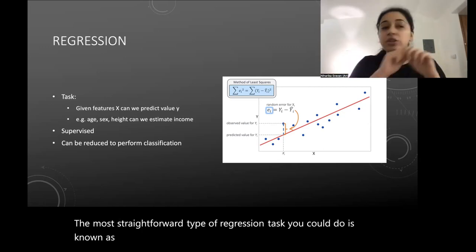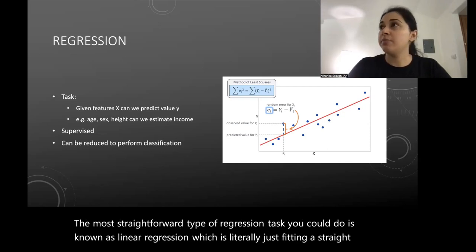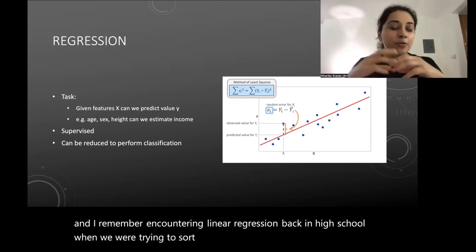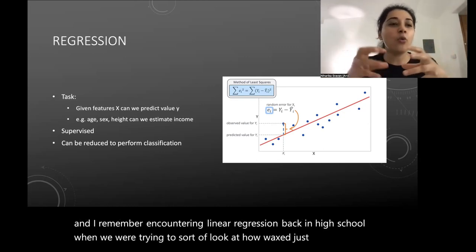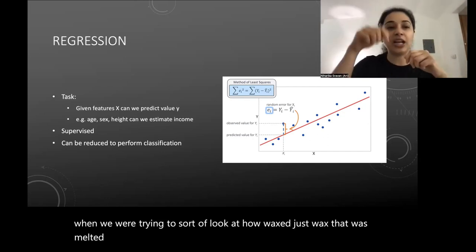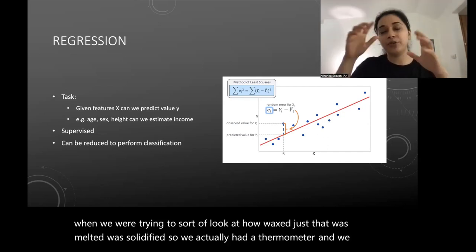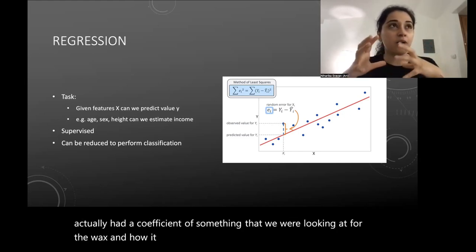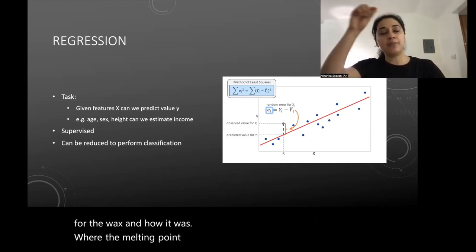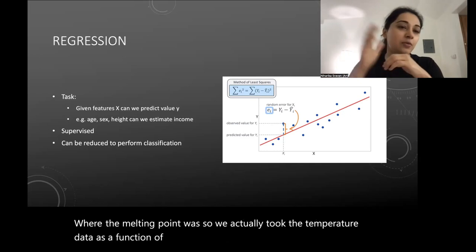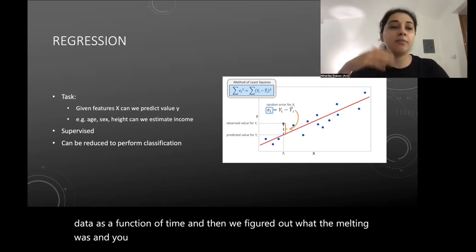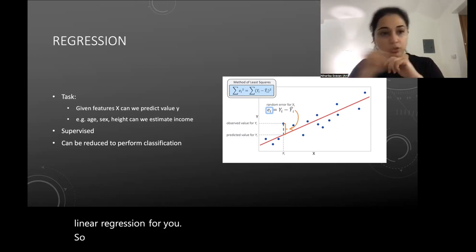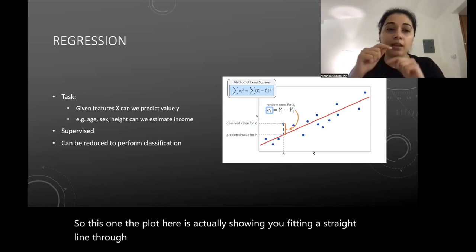The most straightforward regression is linear regression — literally fitting a straight line. I remember encountering linear regression in high school when we looked at how wax solidified: we took temperature data as a function of time and figured out the melting point by fitting a straight line. That's linear regression. You can also threshold a regression output to turn it into a classification problem — for example, calling anyone earning above $80,000 'well off' converts a regression into a binary classification.